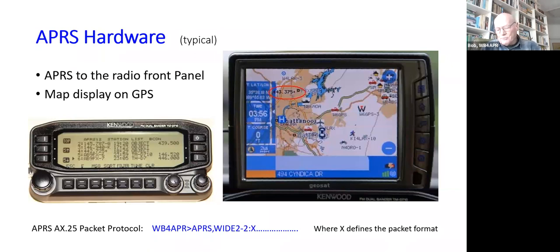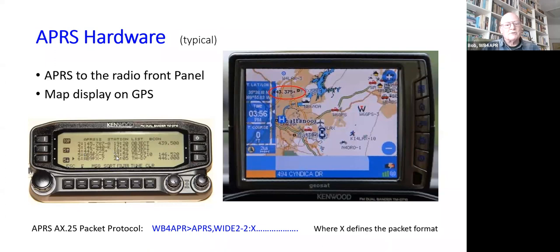APRS hardware used to require a laptop, software, a radio, a TNC, and an antenna. For the last 20 years it's been embedded primarily into Kenwood and Yaesu radios. On the radio front panel you have a plethora of information — each station that shows up has almost five pages of additional information you can browse. The map information is displayed on an attached GPS, hopefully with a mapping application.